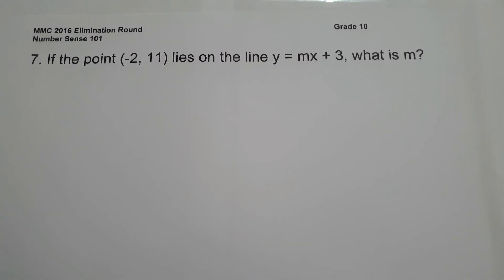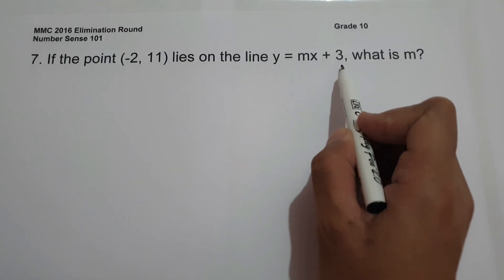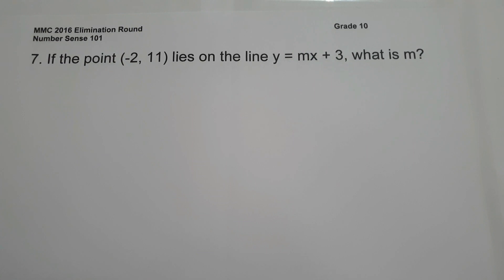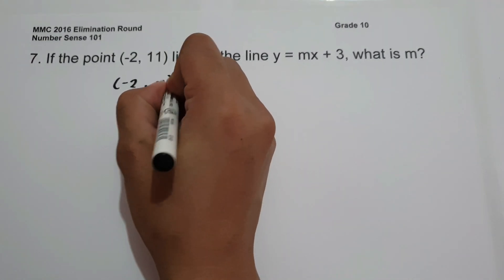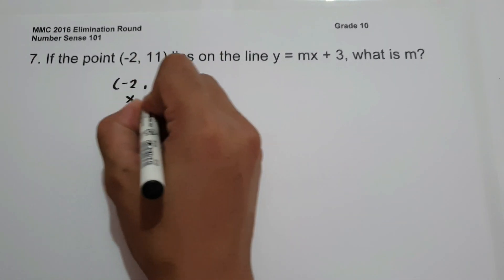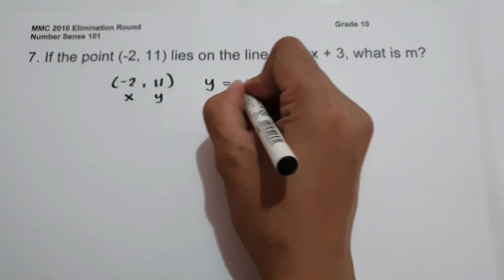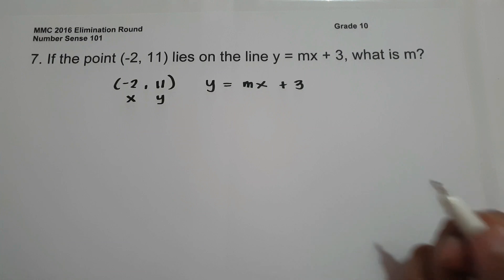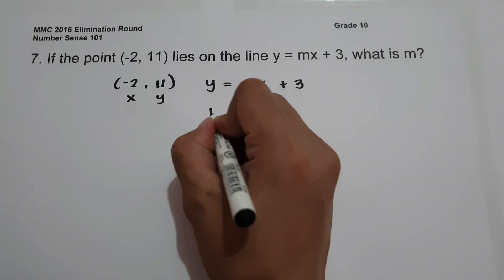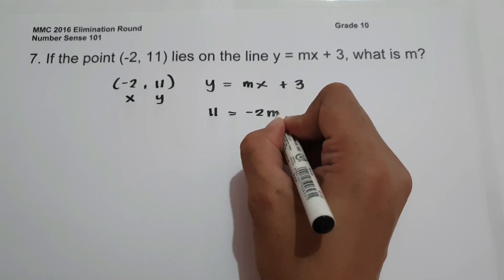For number 7: if the point (-2, 11) lies on the line y equals mx plus 3, what is the value of m? To find the value of m, the given values are x equals negative 2 and y equals 11. Substituting into y equals mx plus 3 gives us 11 equals m times negative 2, that is negative 2m, plus 3.